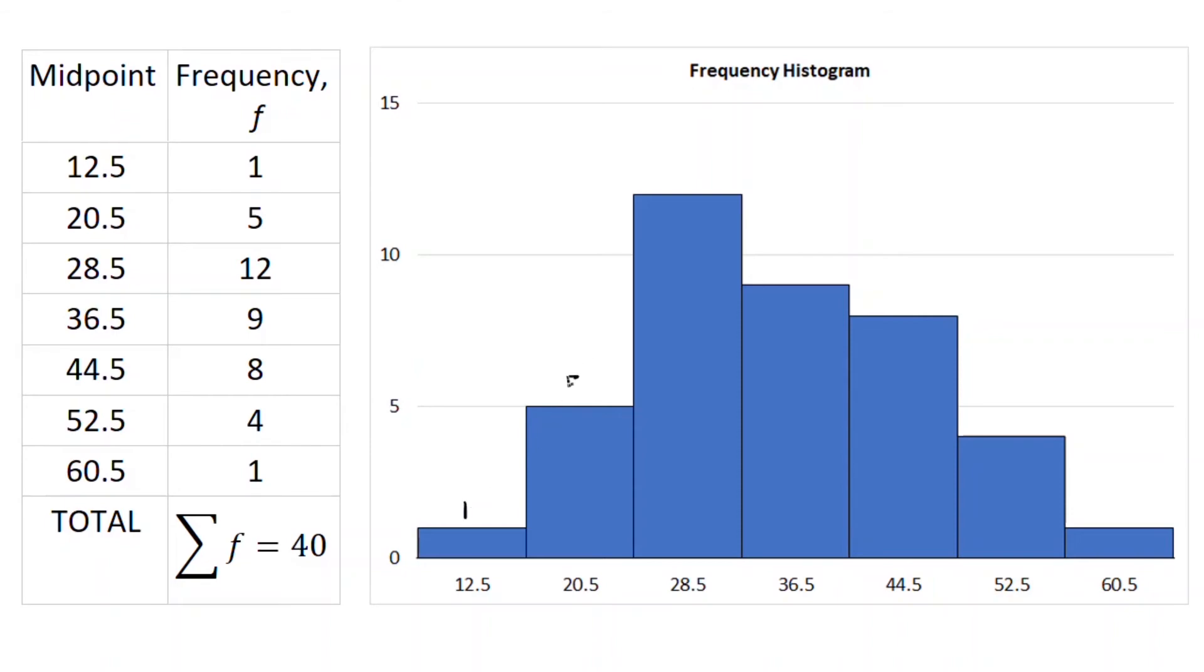What separates a histogram from a normal bar chart is that there is no space between the bars on a histogram. So be sure when you do that, there's no space between the bars.